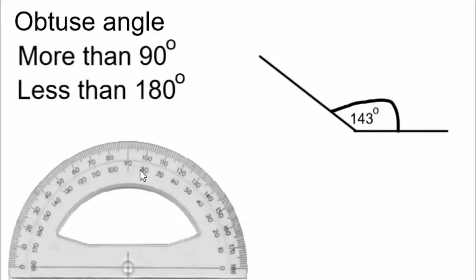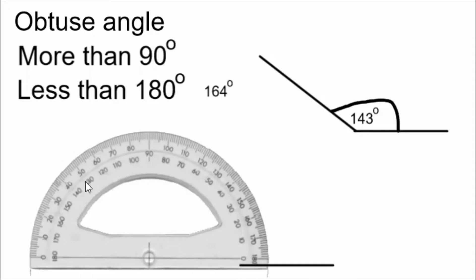Let's draw another obtuse angle. Let's draw one that's 164 degrees. First I need a line to start with. I'm going to put it here, and I move my protractor onto it.